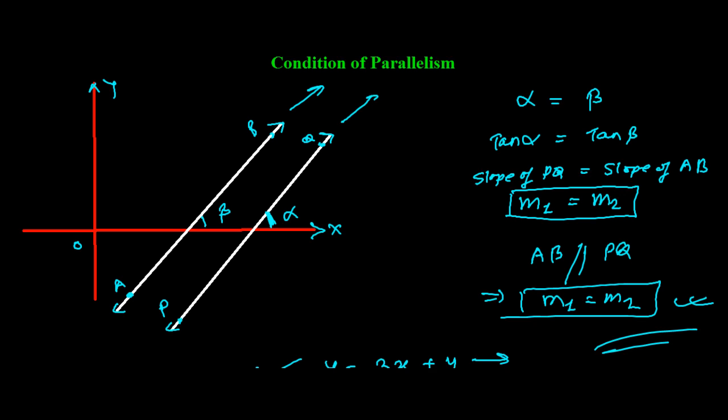Now we're going to learn when two lines become perpendicular. What is the condition for two lines to be perpendicular? For that, let me make a small figure. Suppose here I have a line and here I have another line. Let me give both lines a name. Suppose this is L1 and this line is L2.